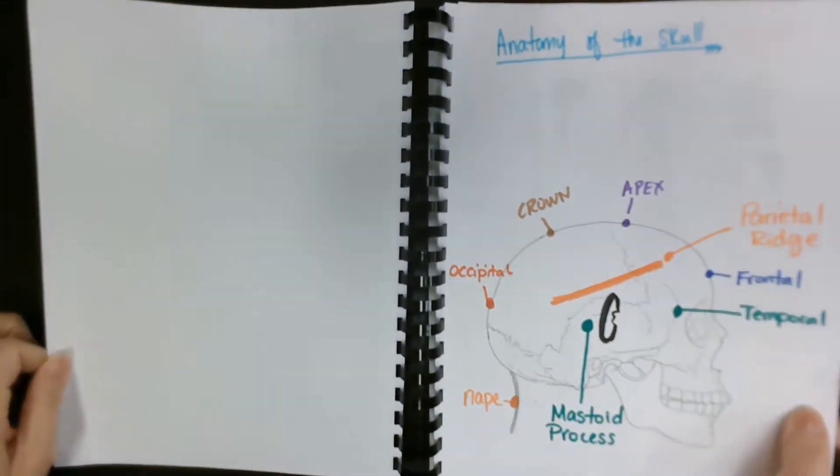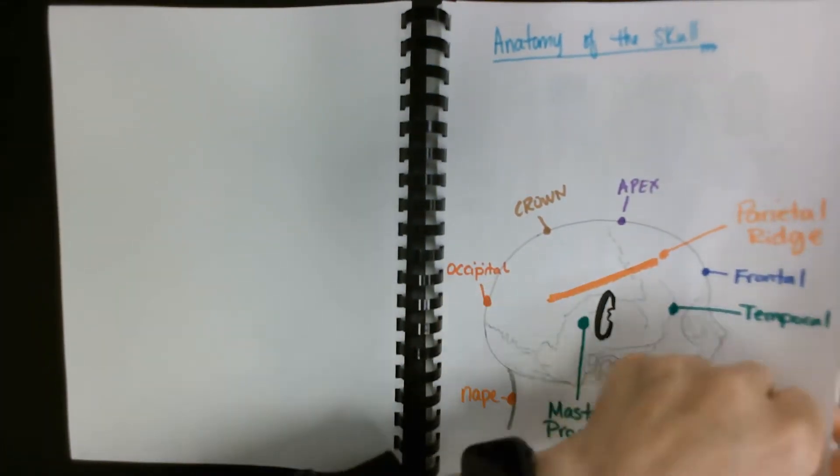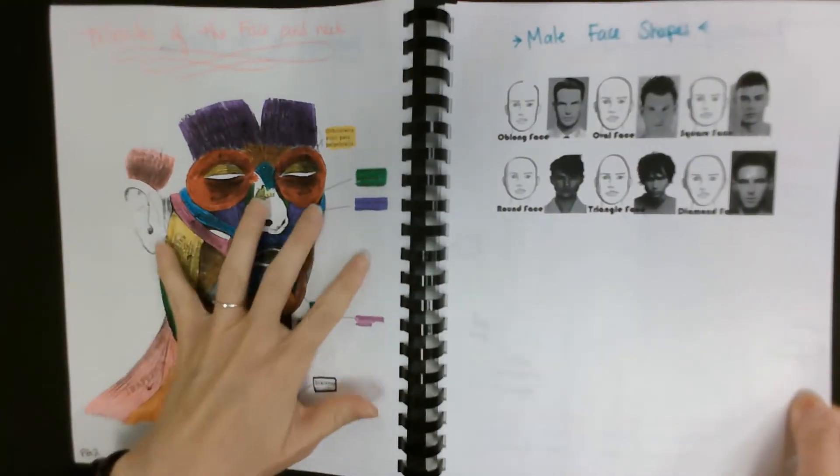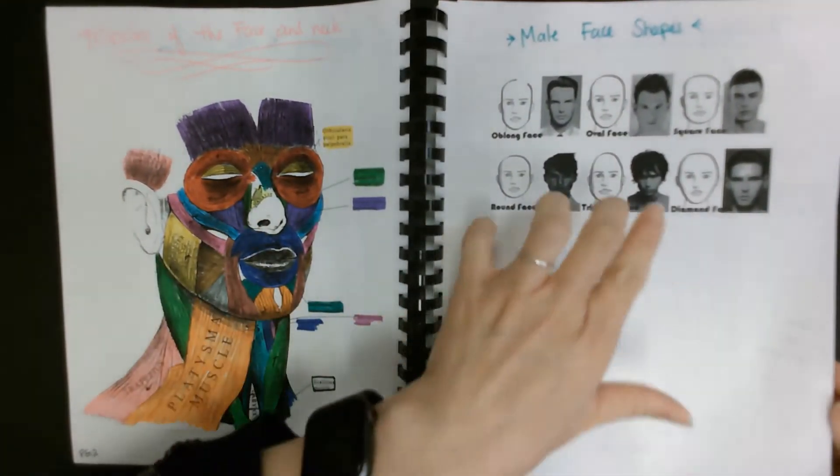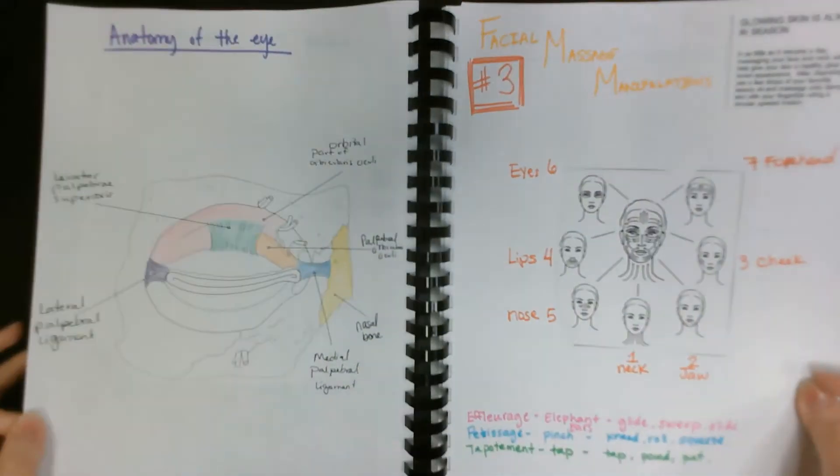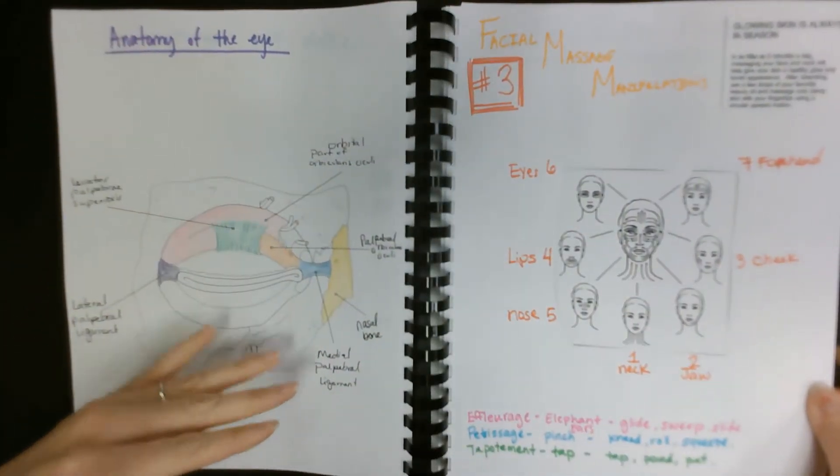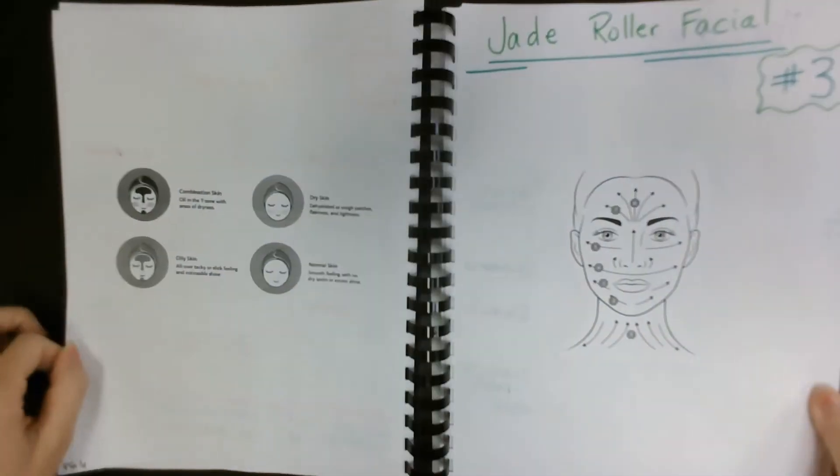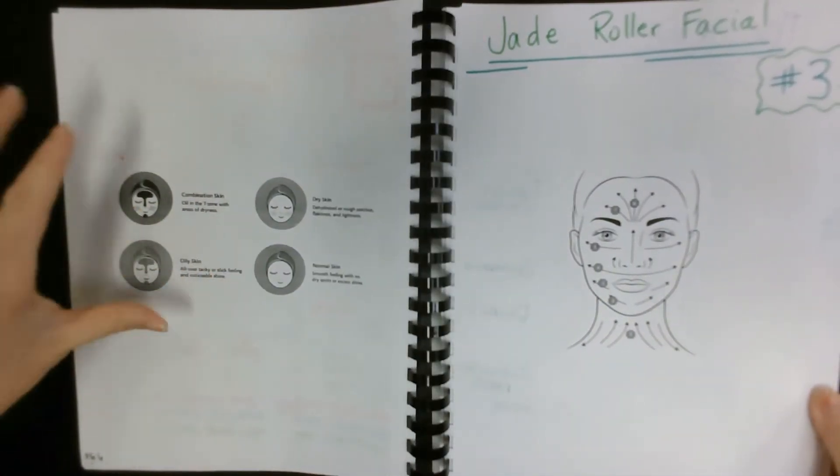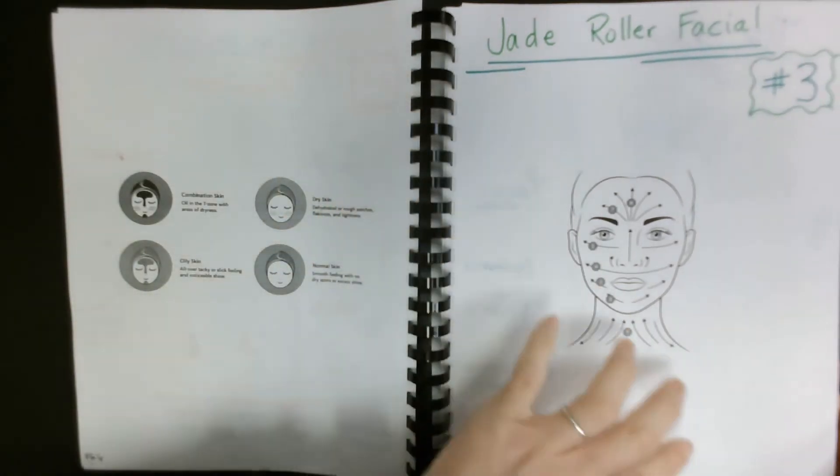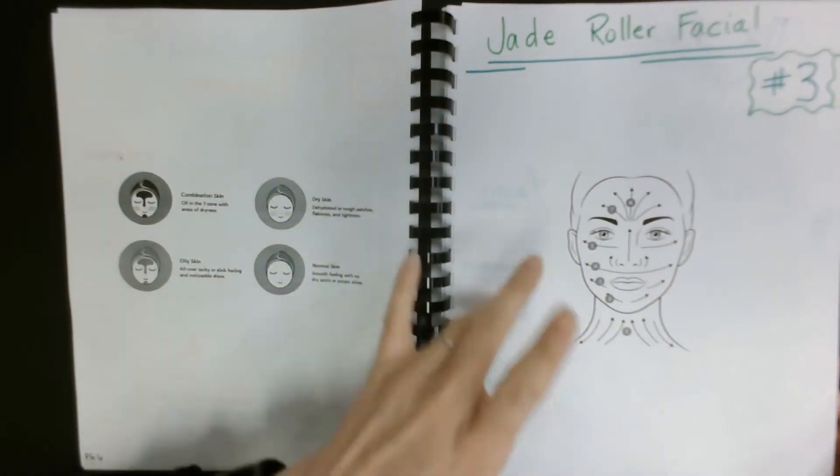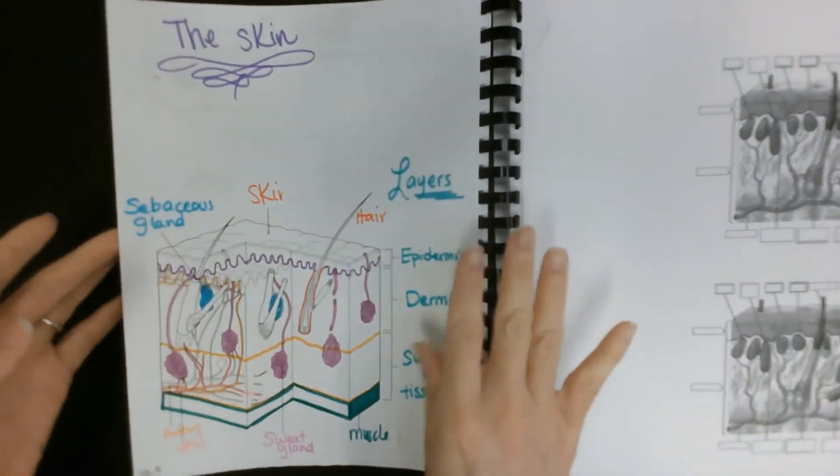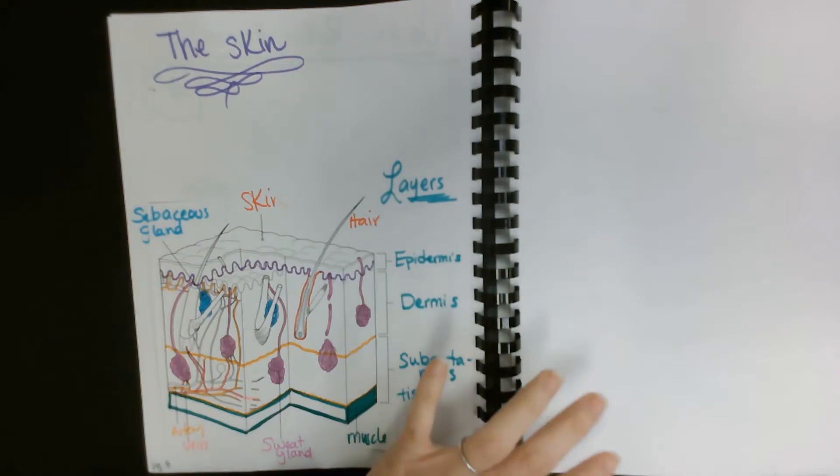We're going to quickly review what we have in here so far: the anatomy of the skull, the muscles of the face, the male face shapes, the anatomy of the eye, facial massage manipulations, the skin types, and on page seven the jade roller facial. Then we did the skin on page eight.